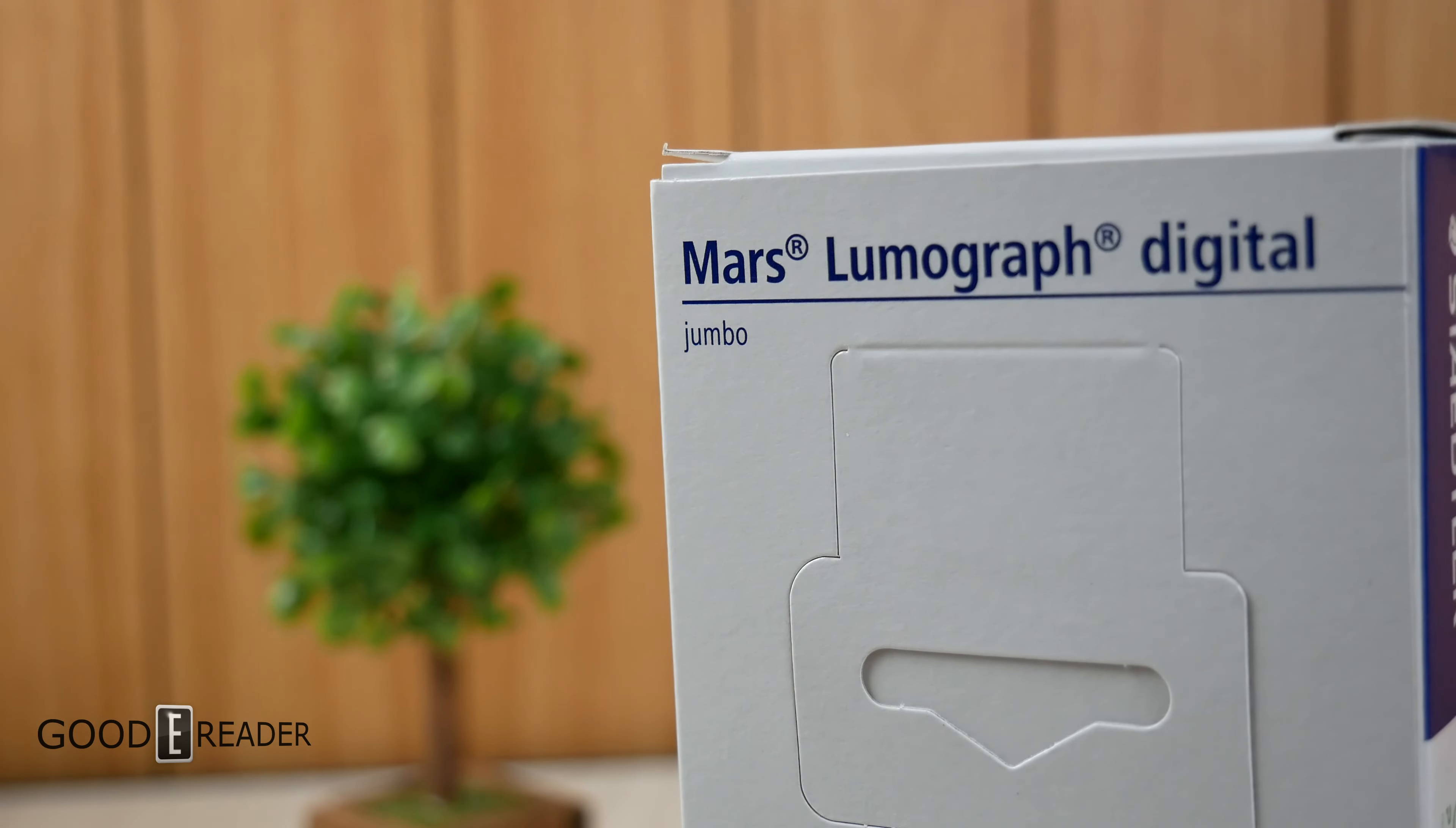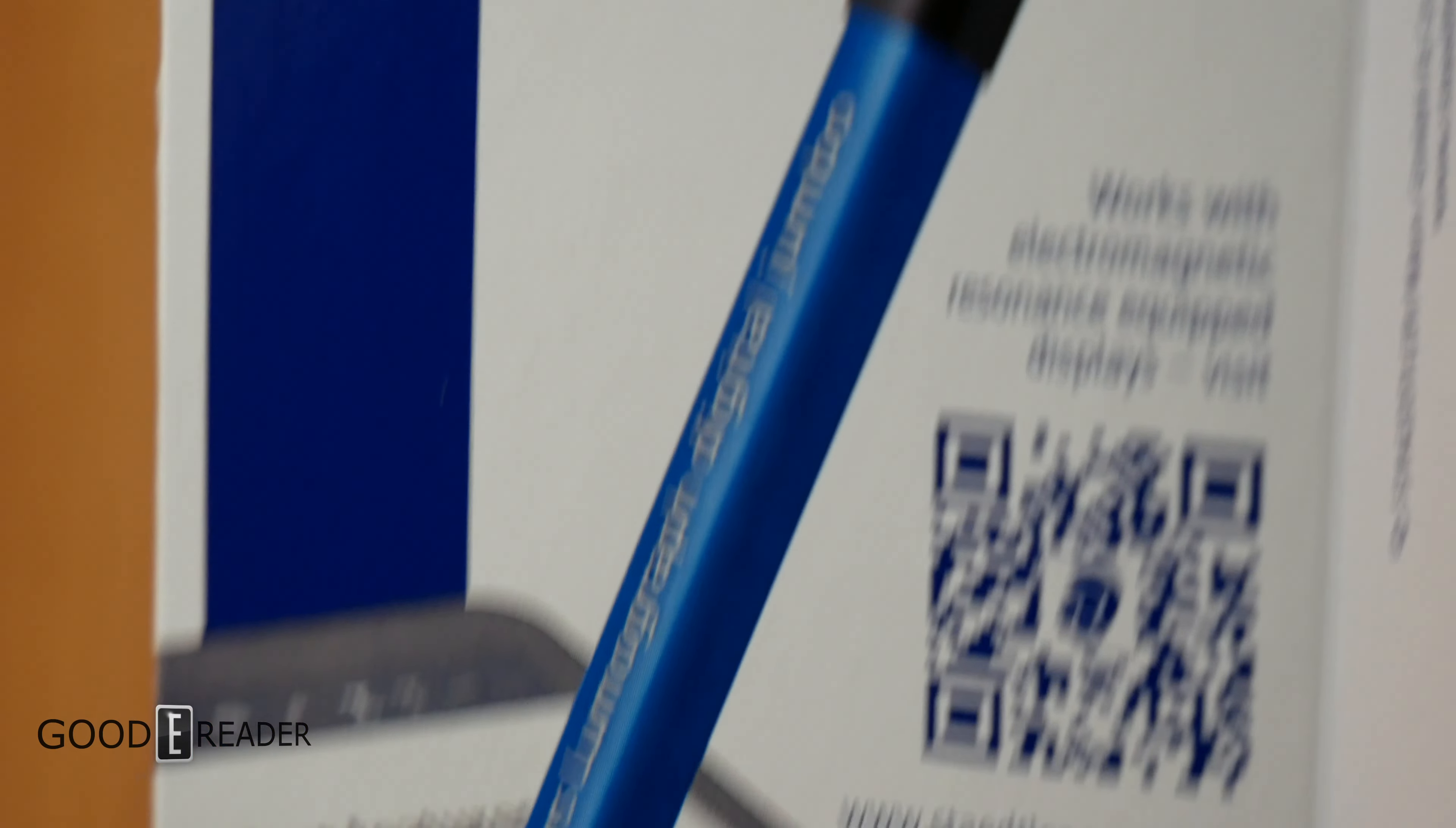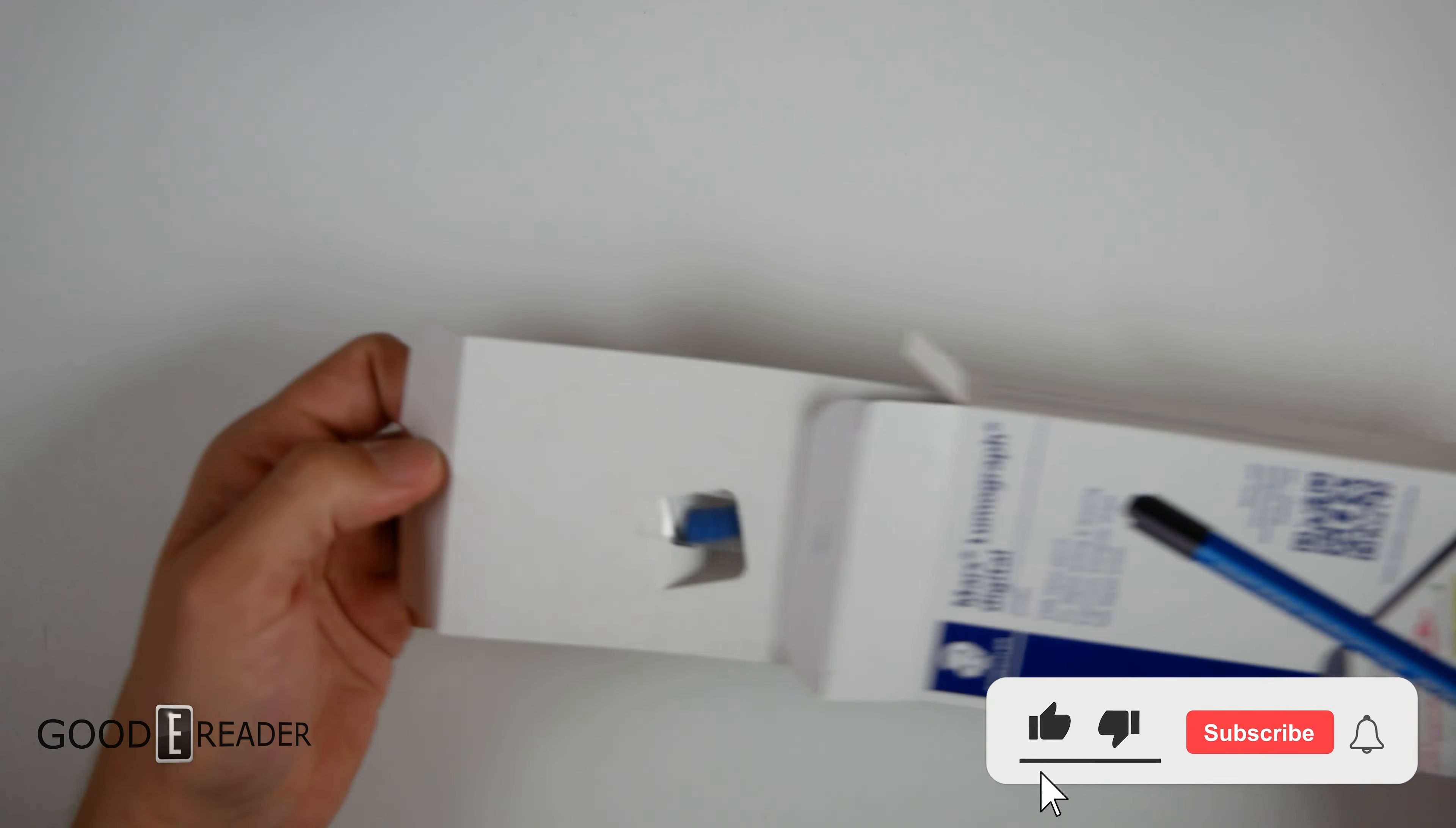The first generation had the Norris Digital Jumbo. The second gen got rid of the jumbo, and now it's back. What is the difference? The eraser and the body length. But we're also gonna crack it open, see what's inside, and then we're gonna weigh it and test it on a Kindle Scribe. We just wrapped up a Kindle Scribe update video, so we'll see what we can see.